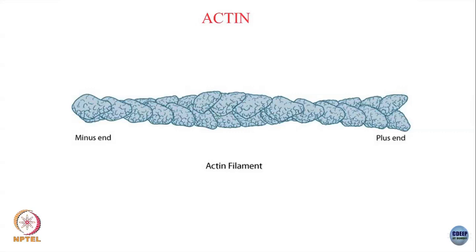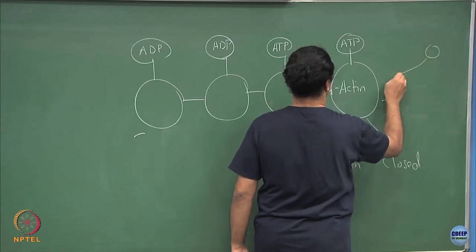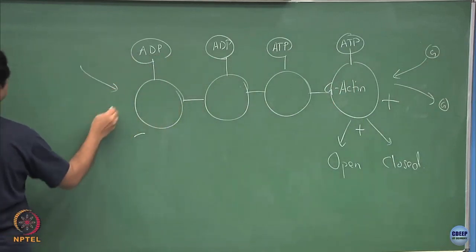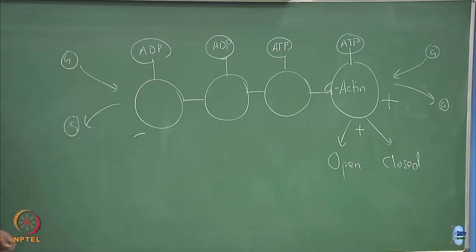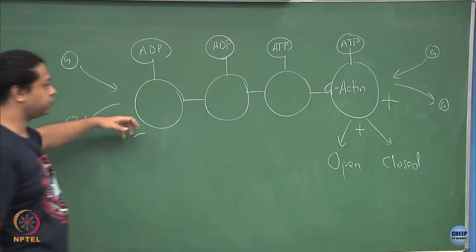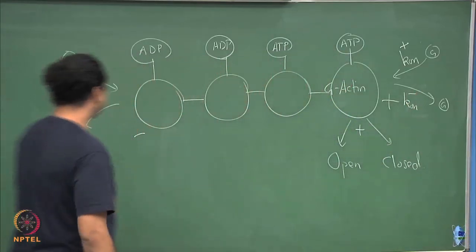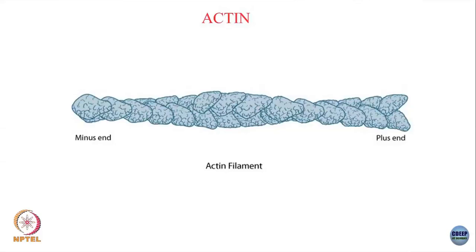As far as actin goes, you can have monomers being added or taken out — these G-actins from both ends, both the plus end and the minus end. You can have monomers being added to the plus end or monomers being taken off from both the plus end and the minus end, except that the rates of these processes are different. Let us say it attaches with some rate k-on-plus and dissociates with some rate k-off-plus, and at the minus end there are on and off rates called k-on-minus and k-off-minus. Generically these are different, and for actins the growth is faster at the plus end.